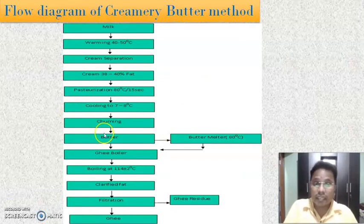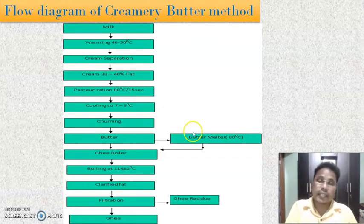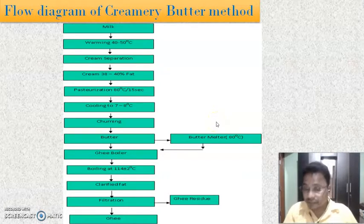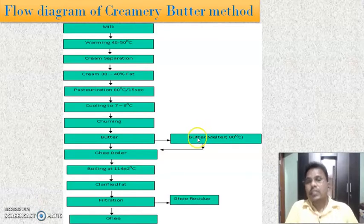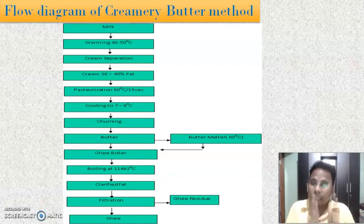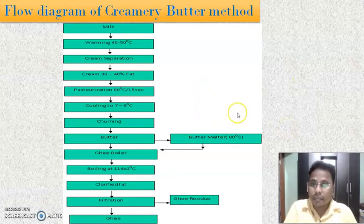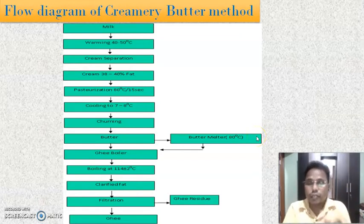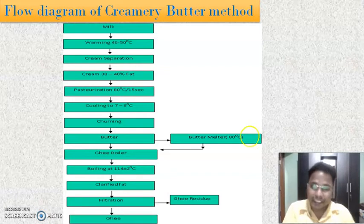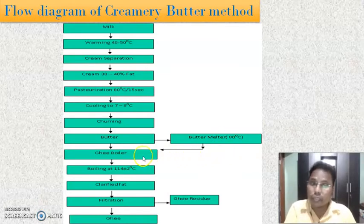This butter is taken into a separate vessel called the butter melter. As we saw in the previous slide, the butter is melted to 60 to 80 degrees Celsius. To melt this butter, it is generally cut into small pieces, which helps it to melt easily. The butter is melted here in the butter melter between 60 to 80 degrees Celsius. When the butter is melted, it is pumped to the ghee boiler, which is the second vessel.